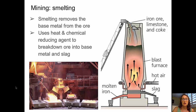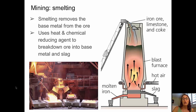Once the ore has been removed from the ground, it needs to be processed through a technique called smelting. Smelting removes the base metal from the ore by using heat and a chemical reducing agent to break down the ore into the base metal and a waste product called slag. A diagram shows a blast furnace where ore enters from the top, hot air moving upward drives the chemical reduction process to produce molten iron, with a worker shown separating out the molten base metal.